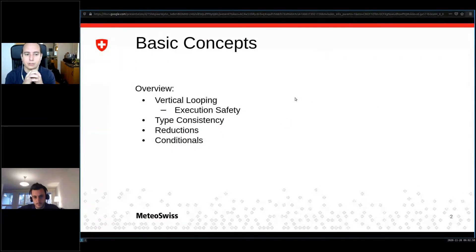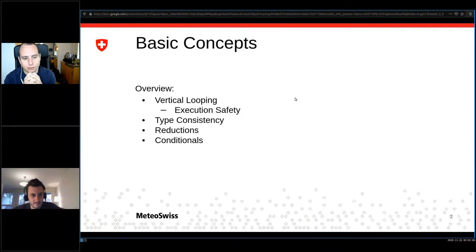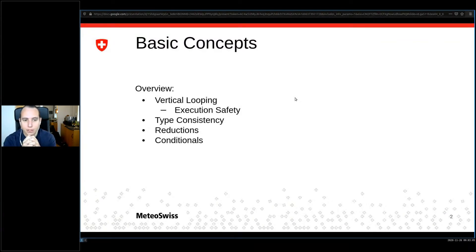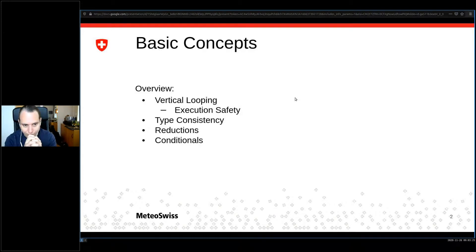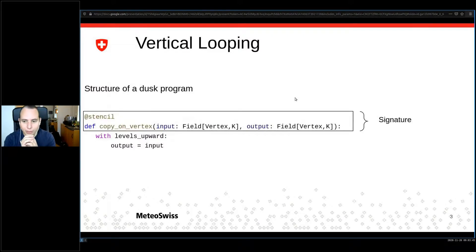Let's dive right in. Here are the materials I want to cover today: vertical looping, which we saw yesterday but I want to make explicit; Dawn as a strictly typed language requiring all intended types listed before running code; type consistency more formally; a short Q&A; reductions, which are probably the most important concept in Dusk and Dawn; and finally conditionals.